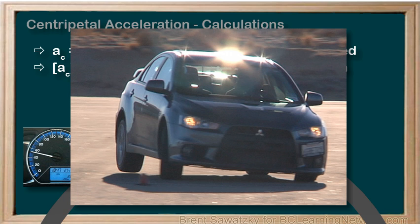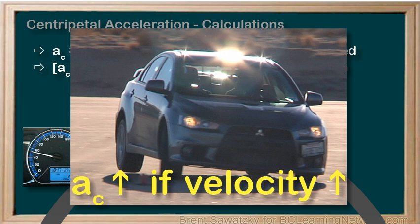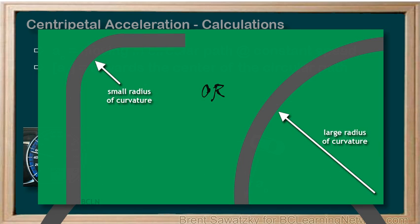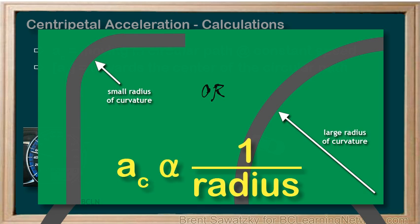Since forces cause acceleration, we know that we would have a greater centripetal acceleration if the passengers in the back seat were shoved against each other and the door, or we heard the tires squeal, or the car tilted. So to make these forces bigger, the faster you take that corner, the bigger the force or acceleration. Which corner would you rather take going 50 km per hour? You'll probably pick corner number two — the bigger the radius of curvature, the less the force or acceleration.